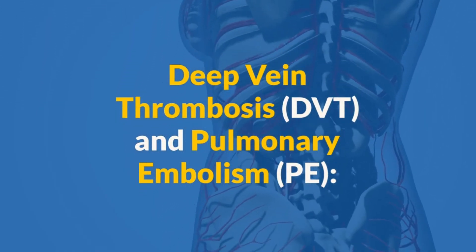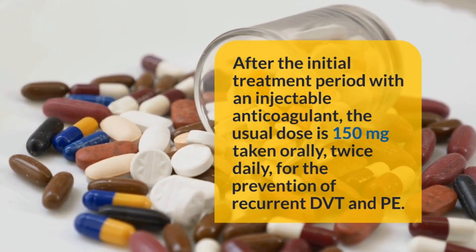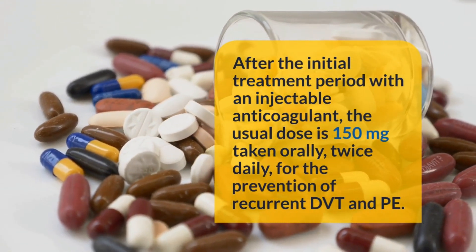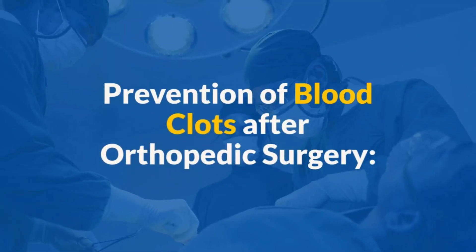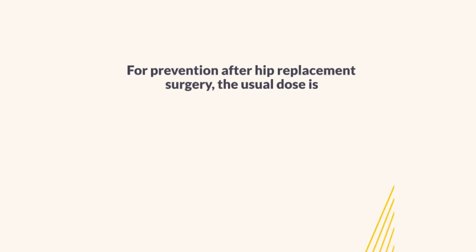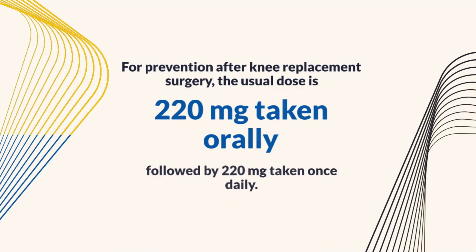In the case of deep vein thrombosis and pulmonary embolism, the usual dose is 150 mg taken orally twice daily, after the initial treatment period with an injectable anticoagulant, for the prevention of recurrent DVT and PE. For prevention after hip replacement surgery, the usual dose is 110 mg taken orally starting 1–4 hours after surgery, followed by 220 mg taken once daily. For prevention after knee replacement surgery, the usual dose is 120 mg taken orally starting 1–4 hours after surgery, followed by 220 mg taken once daily.